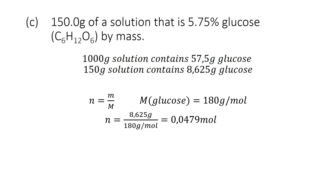In task C you got 150 grams of a solution that is 5.75 percent glucose by mass. One kilogram of solution contains 57.5 grams glucose, and then 150 grams solution contains 8.625 grams glucose. You get the total number of moles if you divide the mass by the molar mass of glucose. 8.625 grams divided by 180 grams per mole results in a total number of 0.0479 moles.